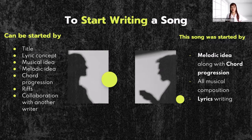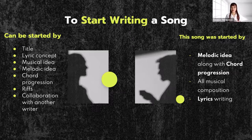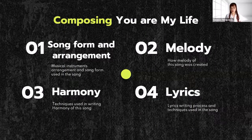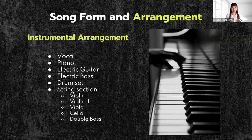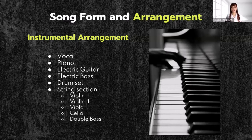In composing this song, all four components will be explained. The instrumental arrangement includes vocal, piano, electric guitar, electric bass, drum set, and string section — violin, viola, cello, and double bass. These are all arranged as a combination of pop song and classical styles. This song uses many techniques to combine pop songwriting and classical arrangement together.